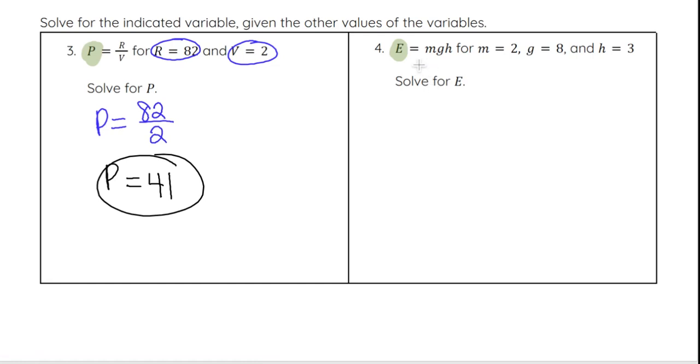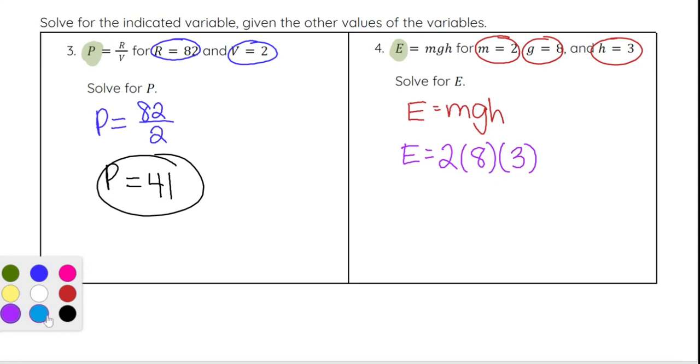For number 4, we have a similar concept. We have E equals MGH for M equals 2, G equals 8, and H equals 3. When we plug those into M, G, and H, we get the equation E equals 2 times 8 times 3.